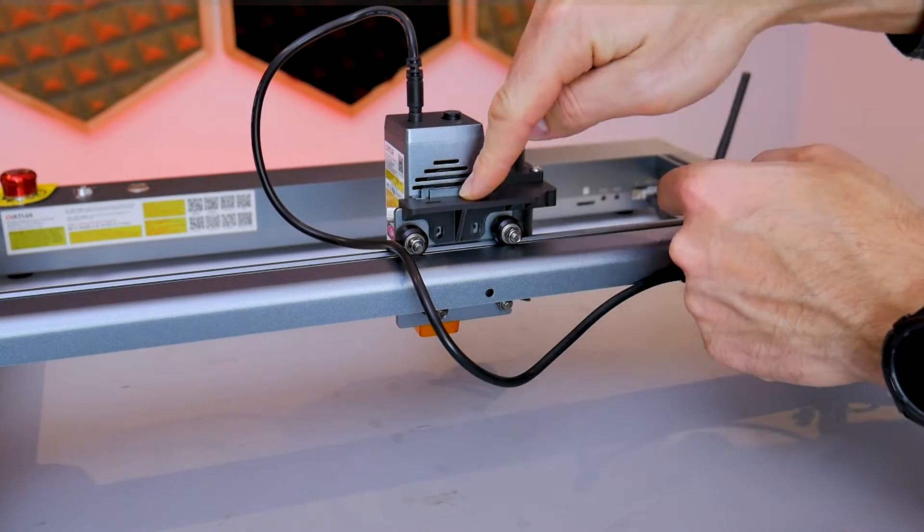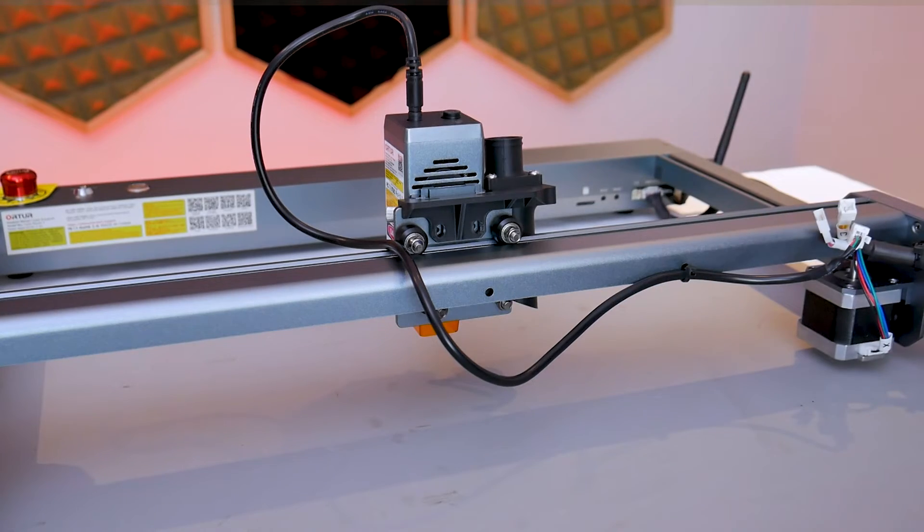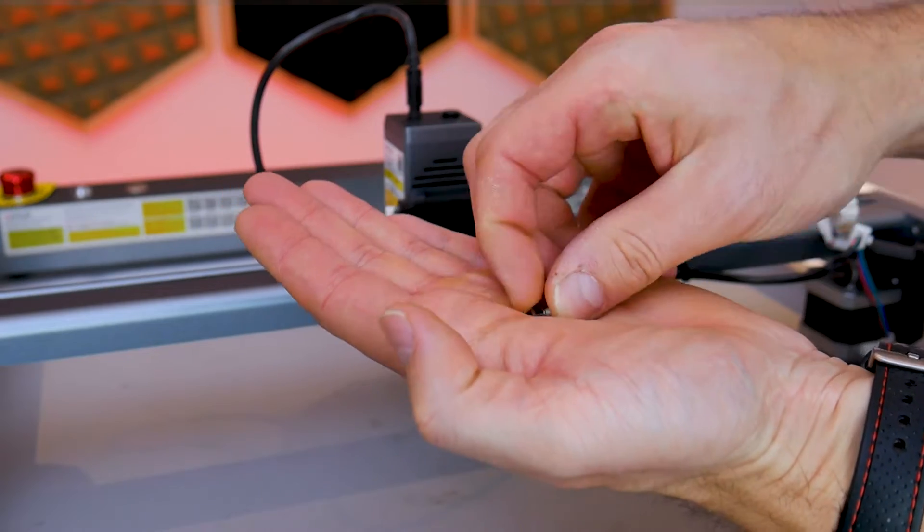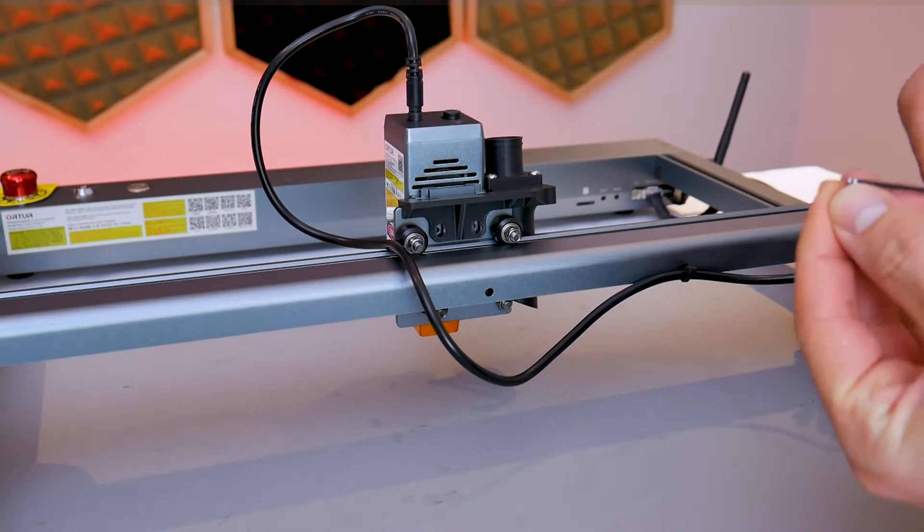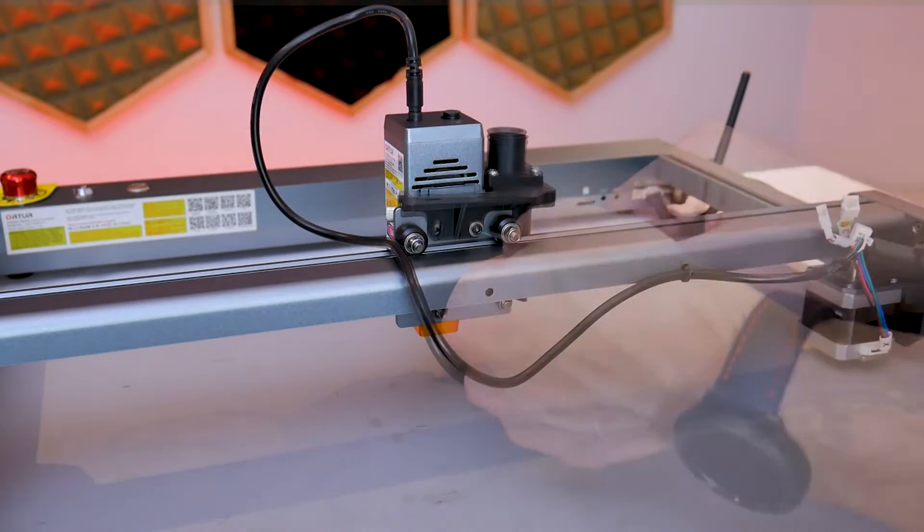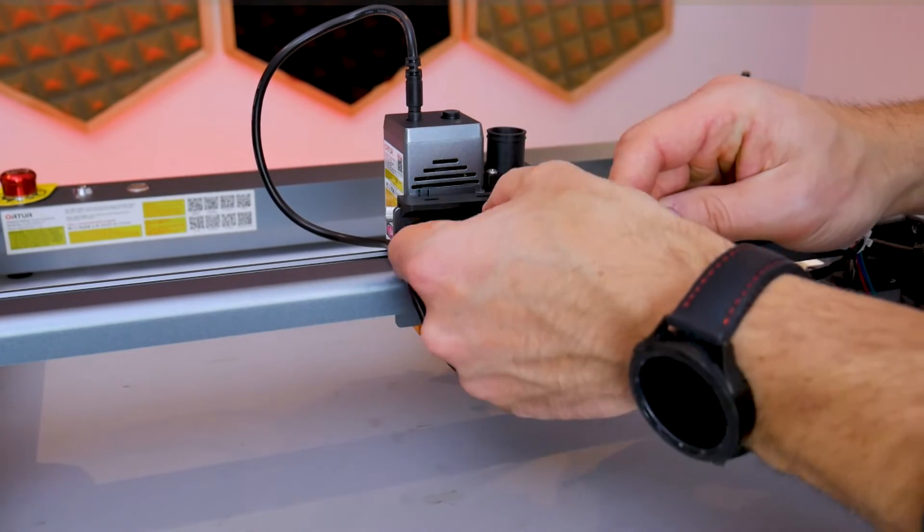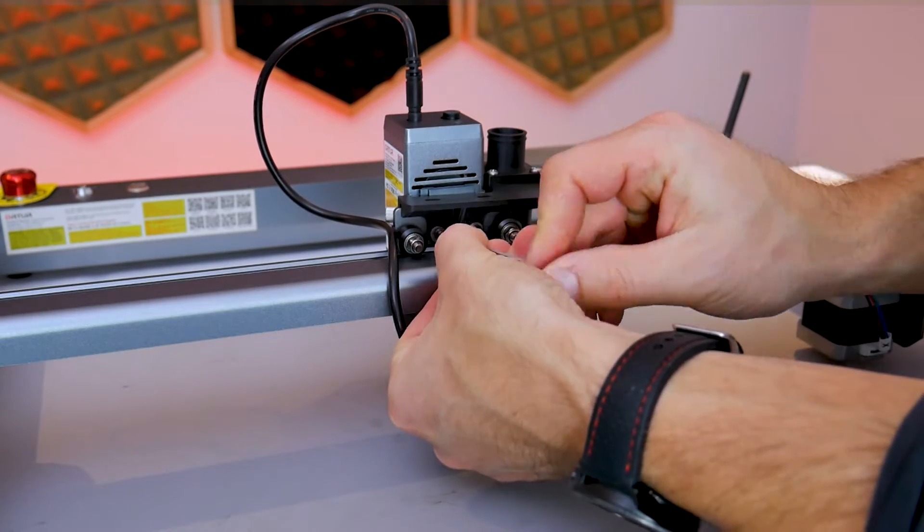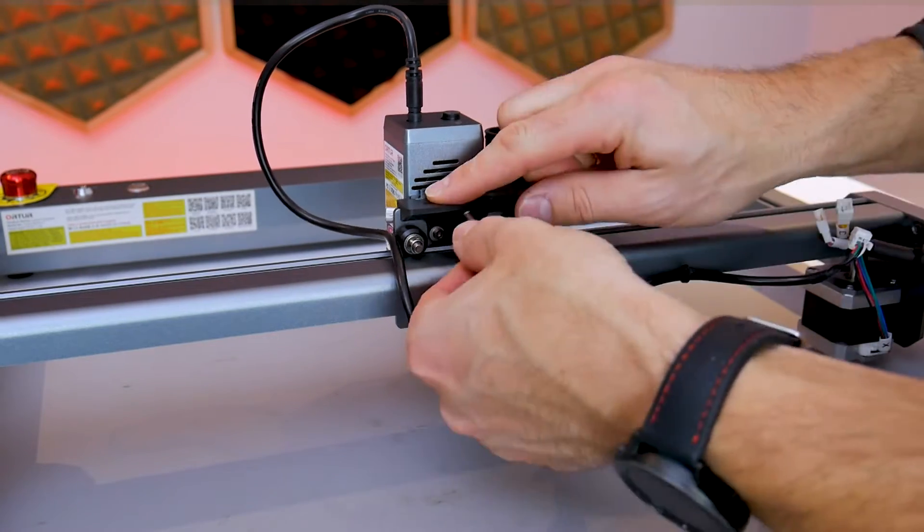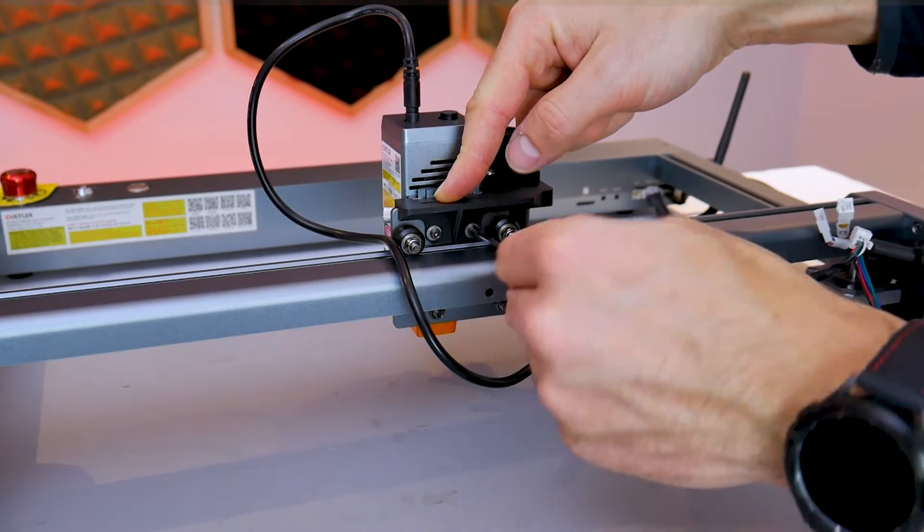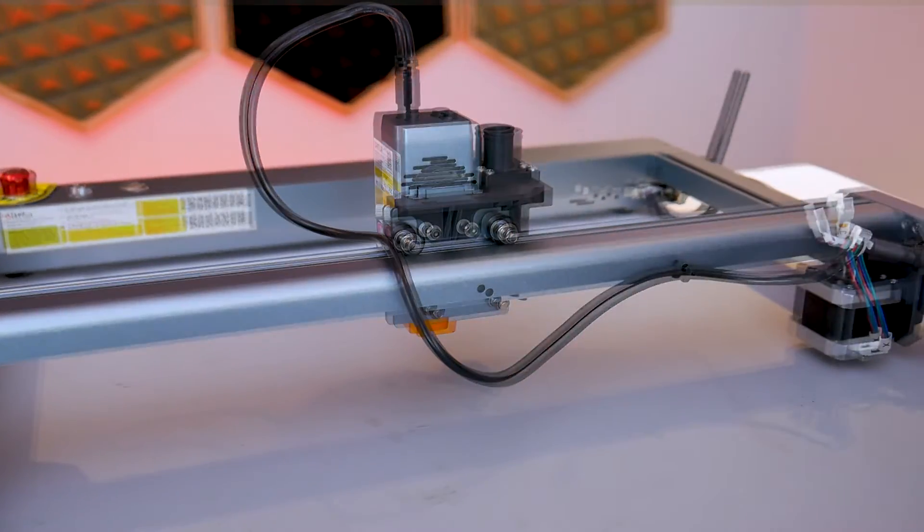Grab one of your M3x8 socket head cap screws as well as the flat washer, and we're going to be reusing the threaded holes that the original Phillips head screws came out of. If you have something like a non-permanent thread locker, it would be a good idea to use this as these screws will be subject to a lot of vibration. Otherwise, just tighten these screws down—there'll be two of them that you'll have to do, one on each side—and don't go too crazy with the torque here, you're just tightening them down on a plastic bracket.